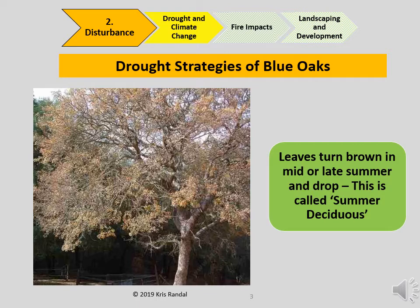The landowner needs to recognize summer deciduous as a natural occurrence that does not necessarily mean the tree is dying or that it is going to die. Of course, death may occur if the water shortage lasts too long.